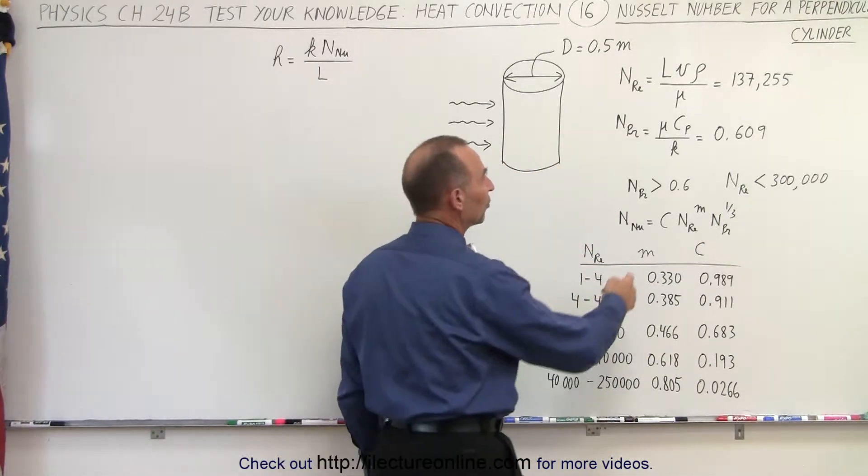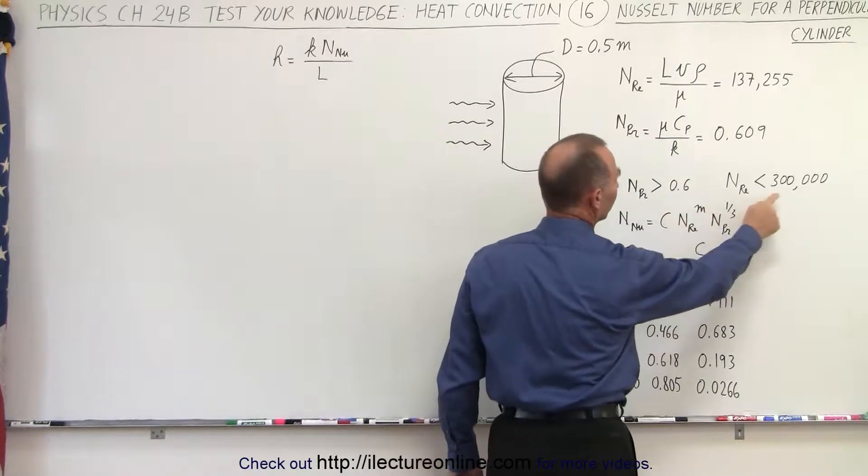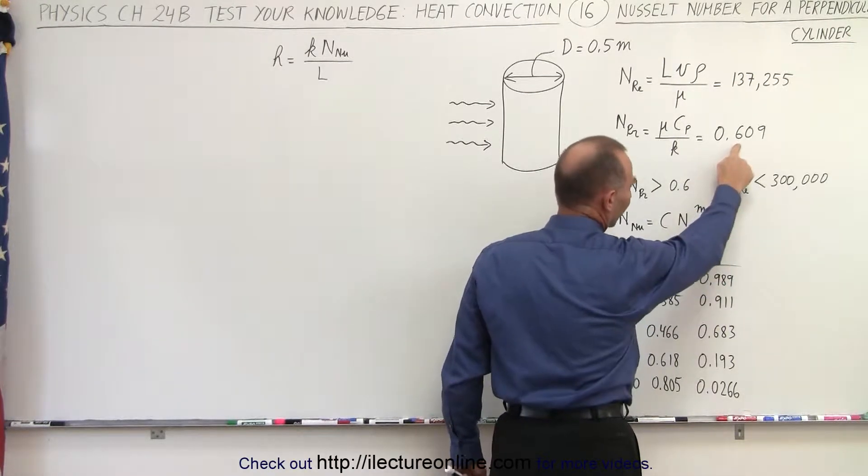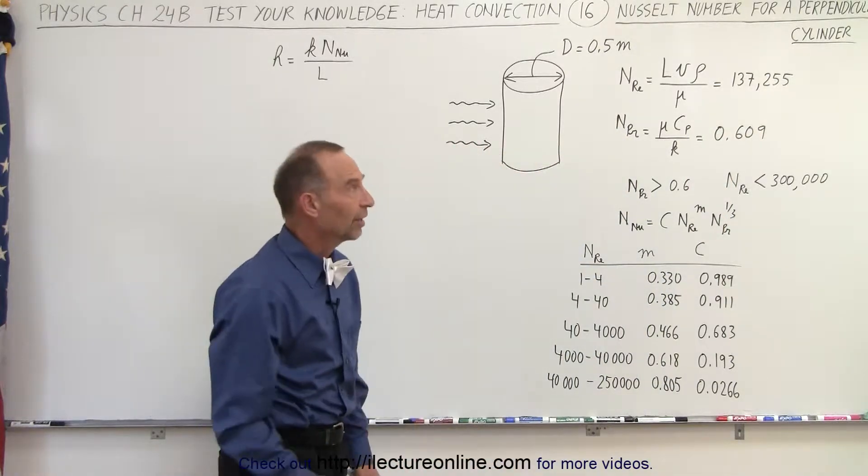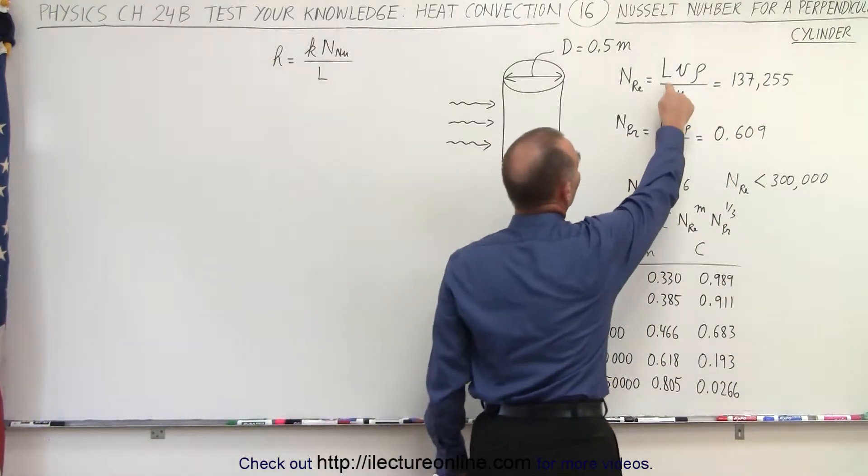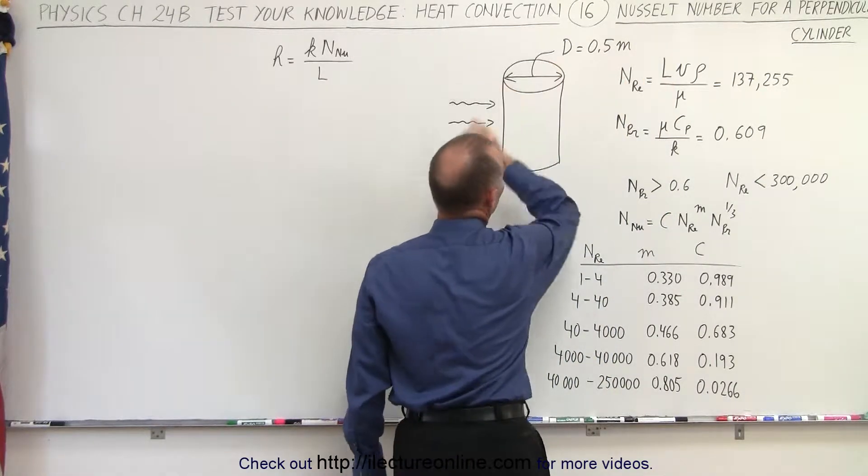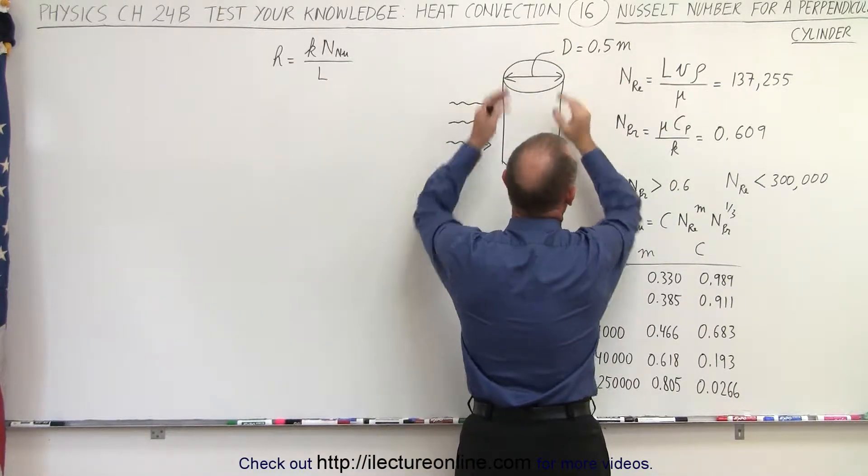Notice in our example we're going to set the Prandtl number equal to 0.609, and we're going to set the Reynolds number equal to 137,000. We can calculate those numbers by knowing the characteristic length, which in this case would be 0.5, would be equal to the diameter.